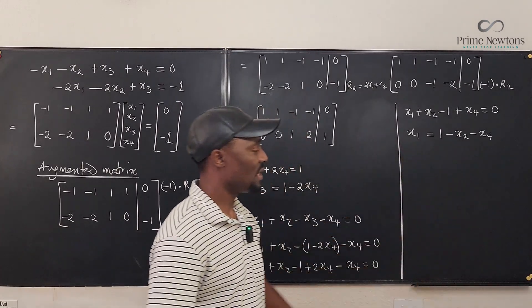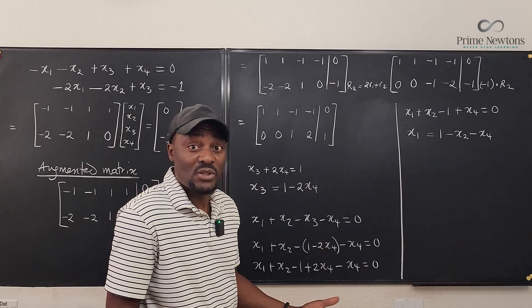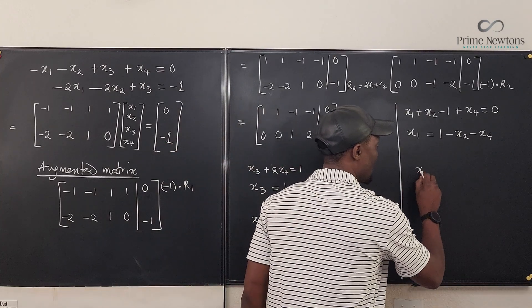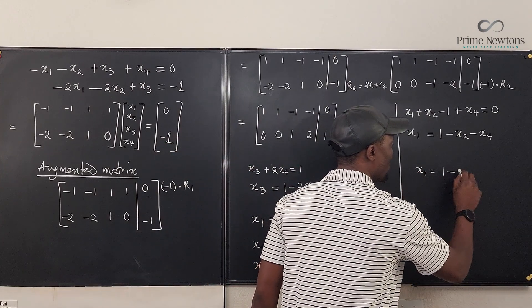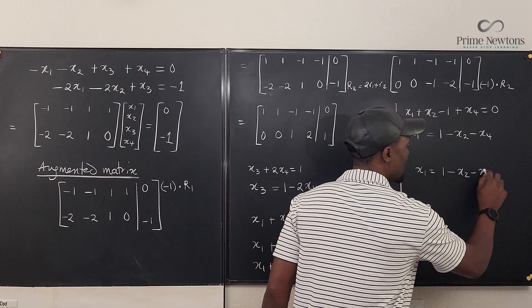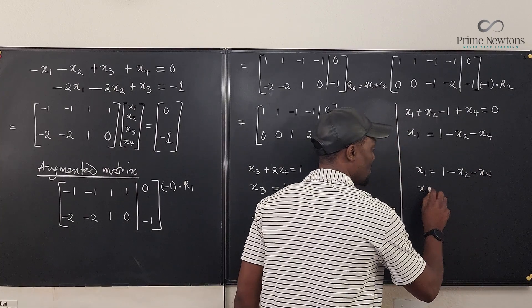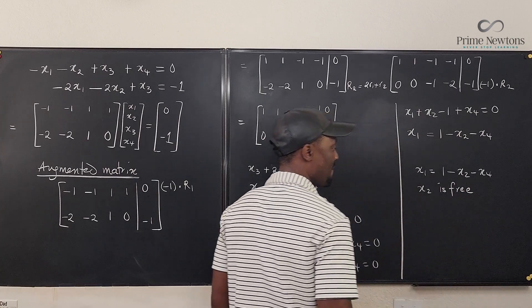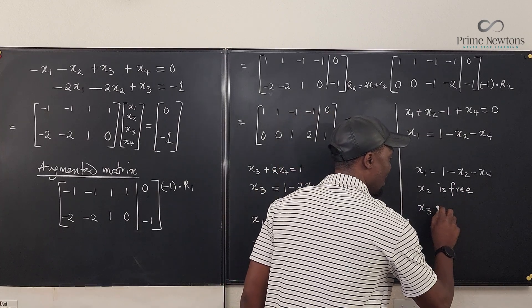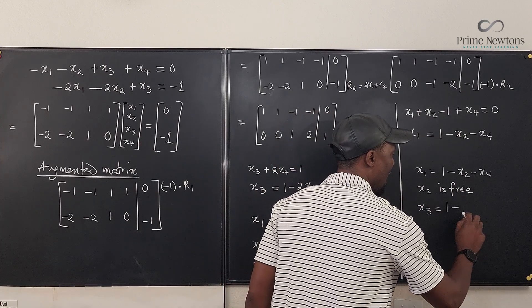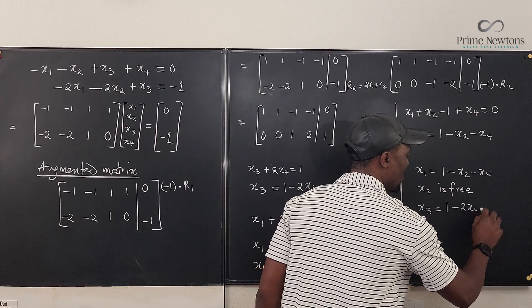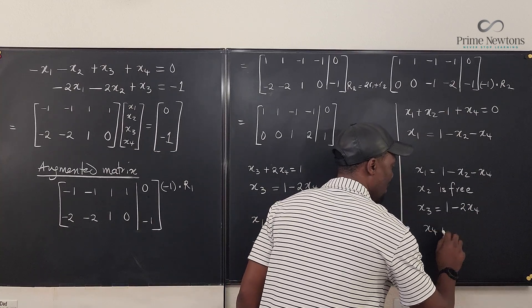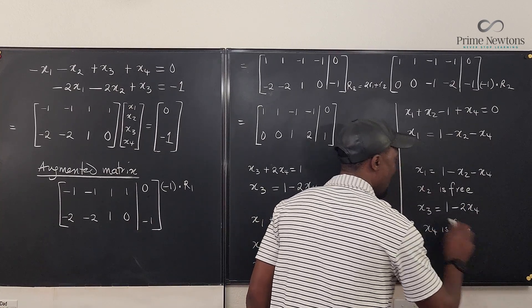So we're done with our calculation. And then you can write your answer. We know that x1 can be written as a combination of one minus x2 minus x4. We know that x2 is free. Nice. I like to be free. And then x3 is a combination of one and two x4. And we know that x4 is free. And this is it.